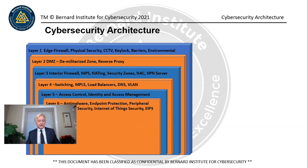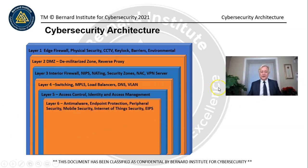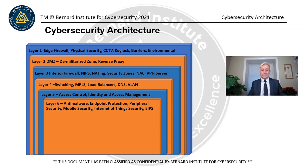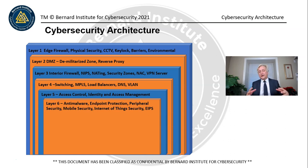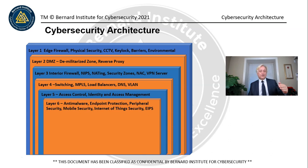Layer 6 includes anti-malware, endpoint protection, peripheral security, mobile security, Internet of Things security, and an enterprise intrusion prevention system. This is on the inside — some security people call this part of the network the 'squishy' part. Hopefully it's not squishy in your network, meaning not very secure. At layer 6, we are behind a number of different layers protecting us from Internet-based attacks.